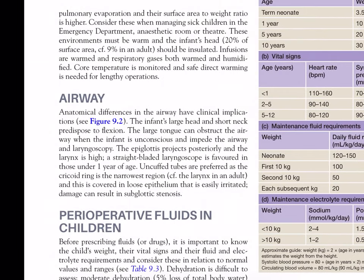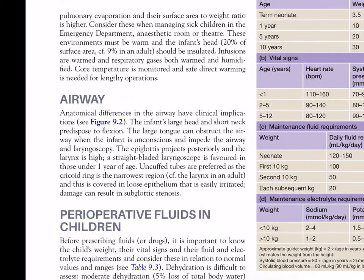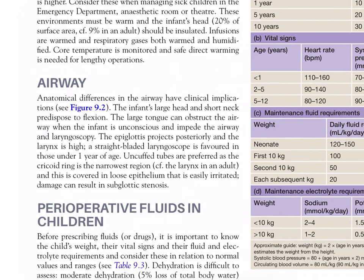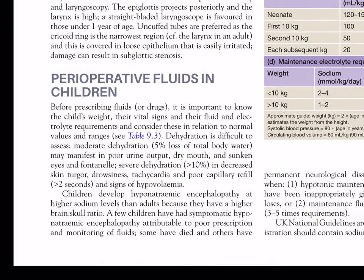Airway. Anatomical differences in the airway have clinical implications. The infant's large head and short neck predispose to flexion. The large tongue can obstruct the airway when the infant is unconscious and impede laryngoscopy. The epiglottis projects posteriorly and the larynx is high. A straight blade laryngoscope is favoured in those under 1 year of age. Uncuffed tubes are preferred as the cricoid ring is the narrowest region, covered in loose epithelium that is easily irritated. Damage can result in subglottic stenosis.